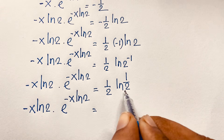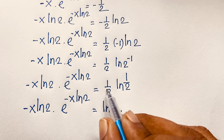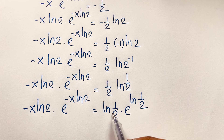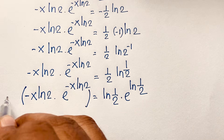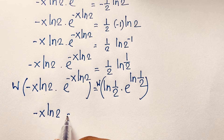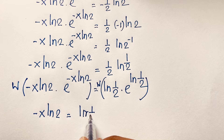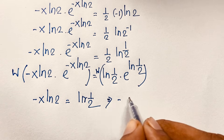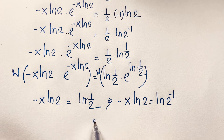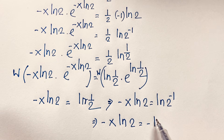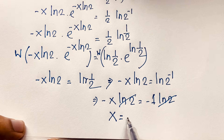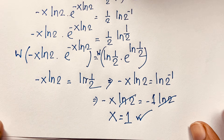Applying the Lambert W function to both sides, since W(a·e^a) = a, we get: minus x·ln2 equals ln(1/2). We can write ln(1/2) as ln(2^(−1)) which equals −1·ln2. So minus x·ln2 equals minus ln2. The ln2 terms cancel, and minus cancels minus, giving x equals 1 as our solution.